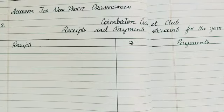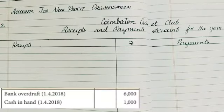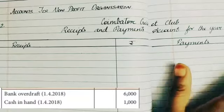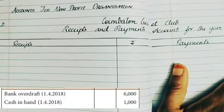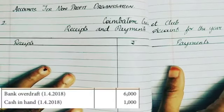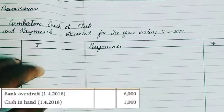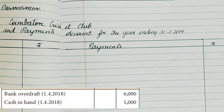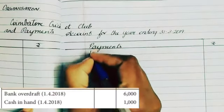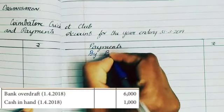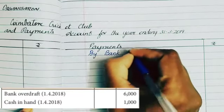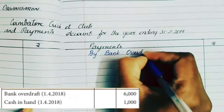The first item is a bank overdraft, which is an opening balance of the bank. Since it is an overdraft balance, we take it to the payment side. If it were a normal balance, it would go on the receipts side. So go to the credit side — the payment side — and write 'By Bank Overdraft' for 6,000 rupees.